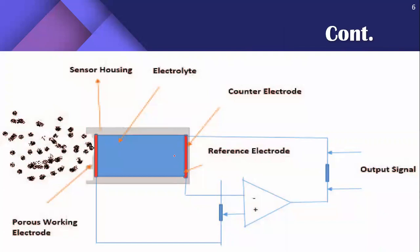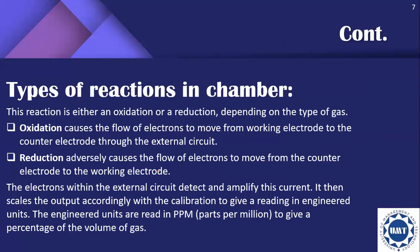When a gas enters the chamber, this reaction is either an oxidation or a reduction depending on the type of gas. In oxidation, there is a flow of electrons from the working electrode to the counter electrode through the external circuit. The external circuit detects and amplifies this current, then scales the output with a calibration to give a reading in parts per million, which is used to give a percentage of the volume of the gas.